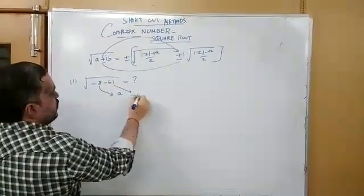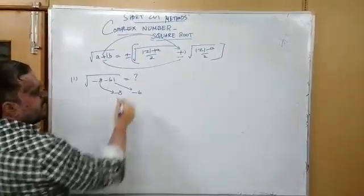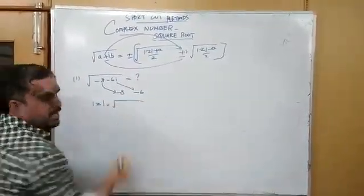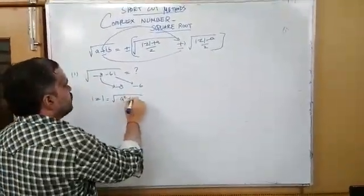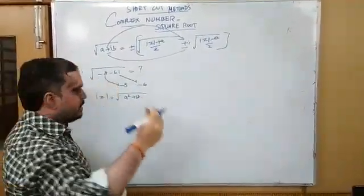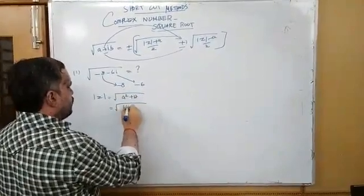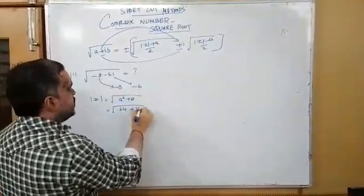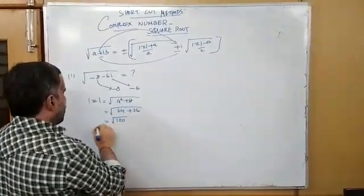First, we find out the modulus of z. The modulus of z is equal to the square root of a squared plus b squared — that is, the real part squared plus imaginary part squared. Here, a squared is 8 squared equals 64, and b squared is 6 squared equals 36. Adding these two gives 100, so the modulus of z is equal to 10. Directly, you can find this in your mind and apply |z| equal to 10.